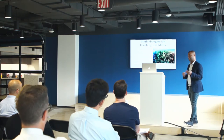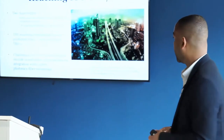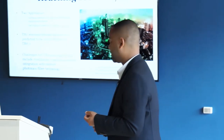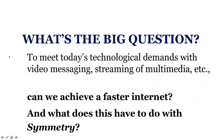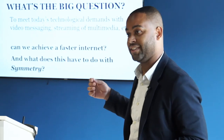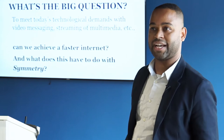We hope that by using the second approach — our terahertz technology — we'll be able to create these wireless networks. A major portion of this is that there are many technological challenges of terahertz technology: we need new modulation, amplification, and more importantly, we need to integrate this new technology into the current technology that we have. Specifically, the AFOSR is funding my group to look at terahertz signal modulation. So can we achieve a faster internet? The answer now is yes. But again, what does this have to do with this idea of symmetry?